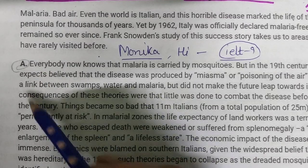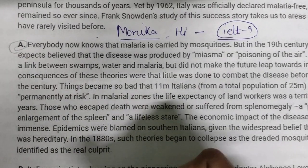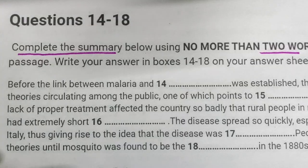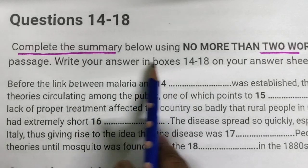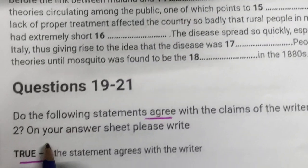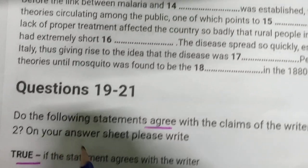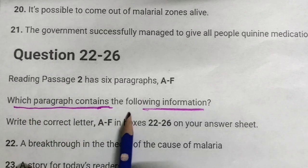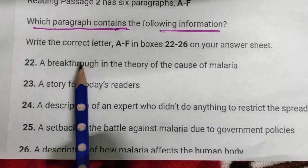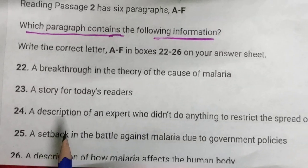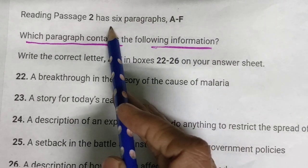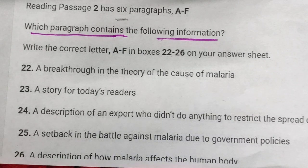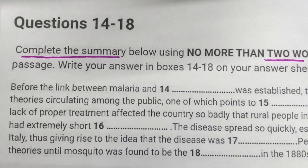This reading is divided into small paragraphs with letters A, B, C, up to F. The first type of question is: complete the summary below using no more than two words. The second type is true/false/not given. The third type is: which section contains the following information? There are five items and six paragraphs, so one paragraph will not be involved.